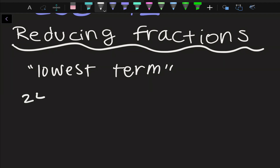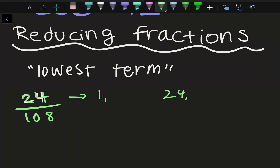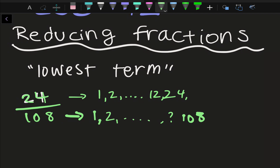If we look at something like 24 over 108, we can look at the factors. 24 can be divided by 1, 2, 12, and a couple of others. 108 — 1 and 108, and since it's even, we know it can be divided by 2 and many others. We can see that both of them can be divided by 2, so this fraction is not in lowest terms.